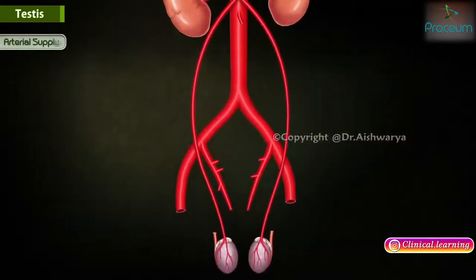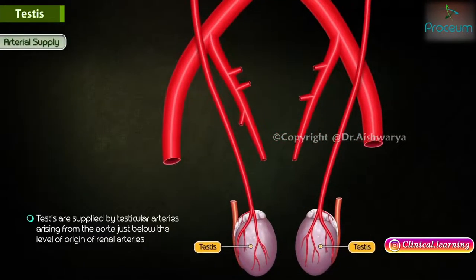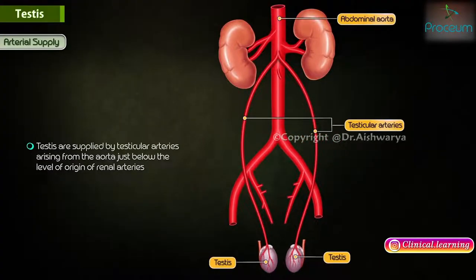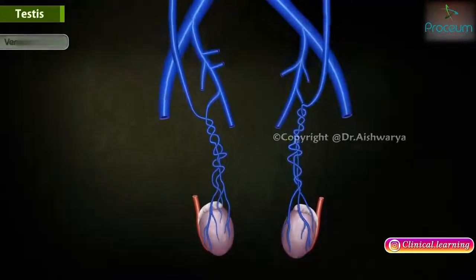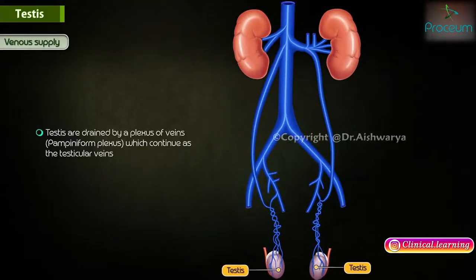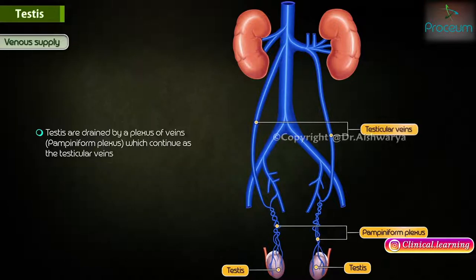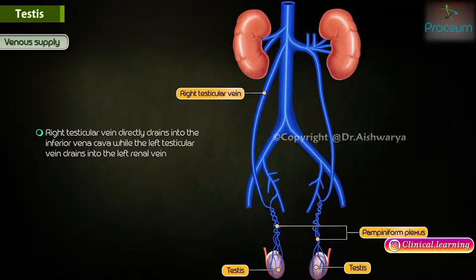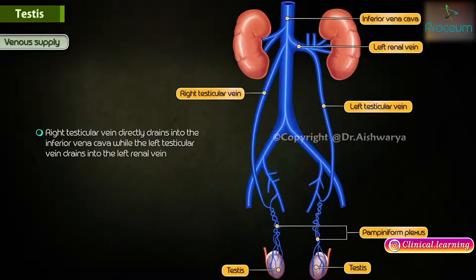Blood supply. The testis are supplied by testicular arteries arising from the aorta just below the level of origin of the renal arteries. Venous drainage. The testis are drained by a plexus of veins, the pampiniform plexus, which continues as the testicular veins. The right testicular vein directly drains into the inferior vena cava, while the left testicular vein drains into the left renal vein.